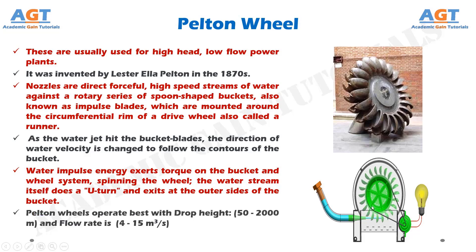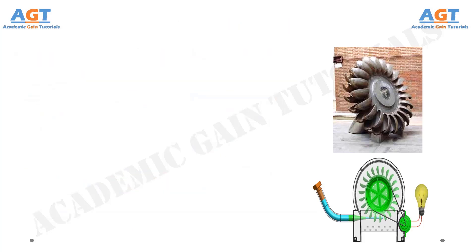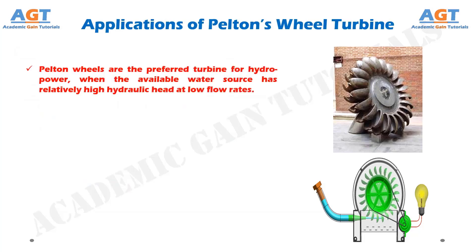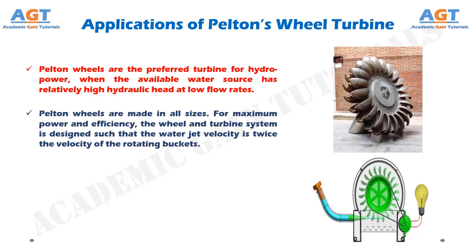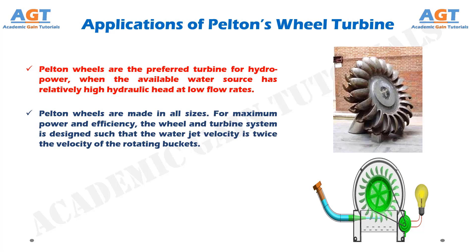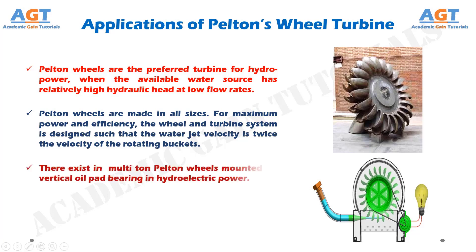Pelton wheels operate best with a drop height of 50 to 2000 meters and a flow rate of 4 to 15 cubic meters per second. Pelton wheels are the preferred turbine for hydropower when the available water source has relatively high hydraulic head at low flow rates. For maximum power and efficiency, the wheel and turbine system is designed such that the water jet velocity is twice the velocity of the rotating buckets. Large multi-ton Pelton wheels are mounted on vertical oil pad bearings in hydroelectric power plants.